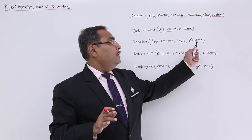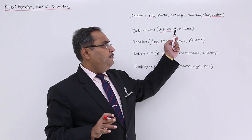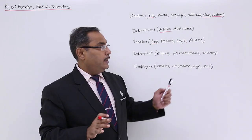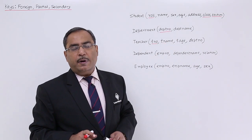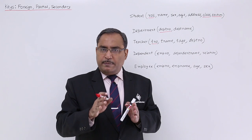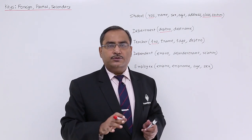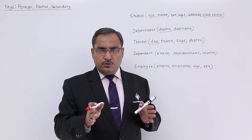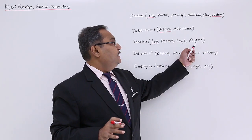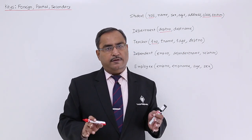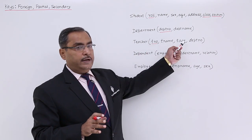This foreign key introduces a domain constraint. For example, the department table has four values: d1, d2, d3, and d4. The department number in the teacher table can only take one of these four values — you cannot assign a teacher to a department number that does not exist in the department table. Always remember: whenever you have a foreign key, you get a domain constraint on it.